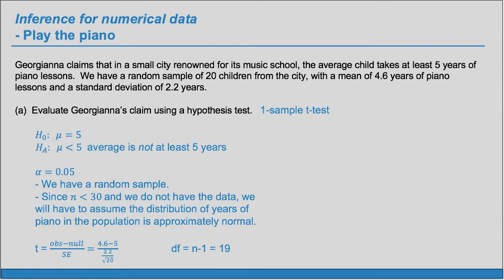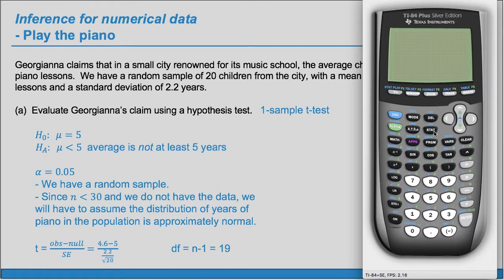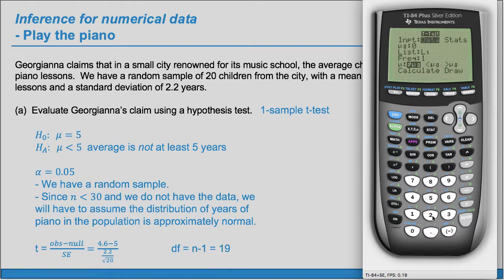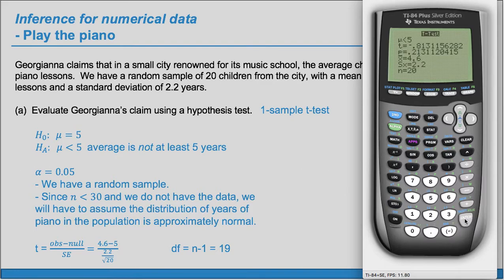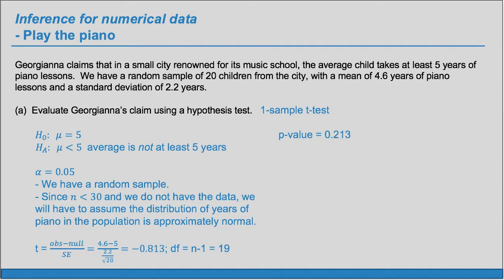We can evaluate this or use a shortcut on the calculator. Go to STAT, over to TESTS. One sample t-test corresponds to T Test, number 2 on a TI. We don't have all the data, so choose Stats and hit enter. Enter mu sub 0 as 5, x-bar as 4.6, s as 2.2, n as 20, and our alternate hypothesis is less than. Then calculate. We get t equals negative 0.813 and our p-value is 0.213.